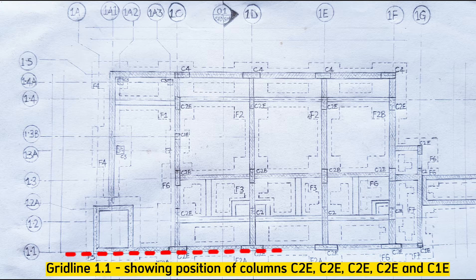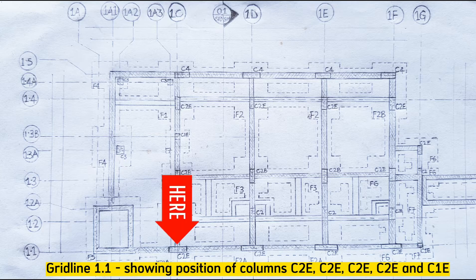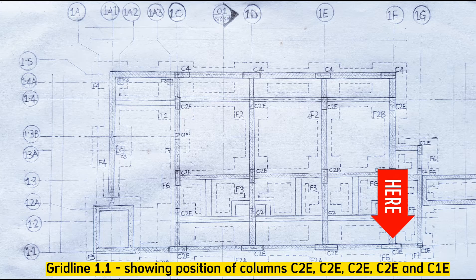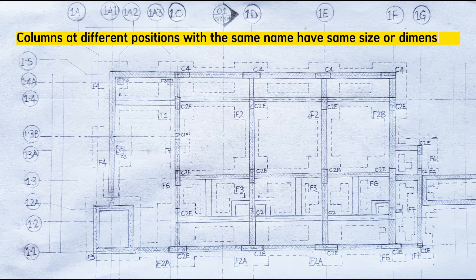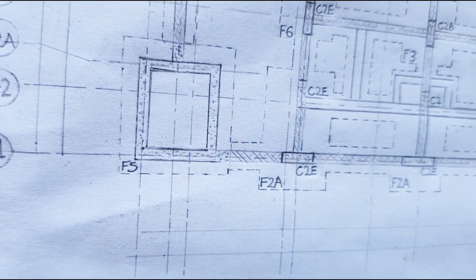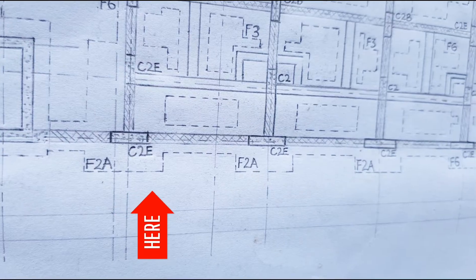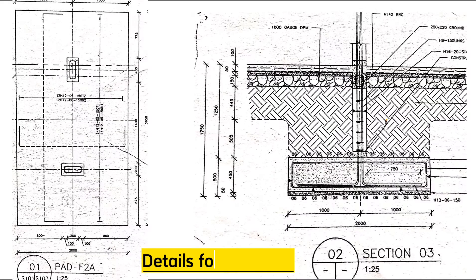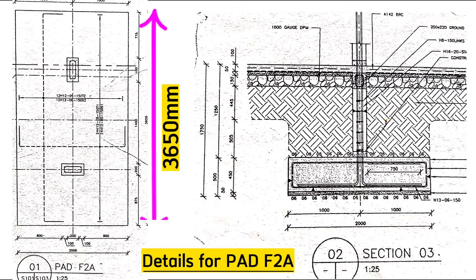Grid line 1.1 shows the position of the lift shaft wall and at the same time shows the position of columns C2E at several locations. Columns at different positions but with the same name will be of the same size. Grid line 1.1 also shows the position of footings F2A at multiple locations, and their section details show 3 meters 650 millimeters along the length and 2 meters along the width, plus other details to be covered in later videos.